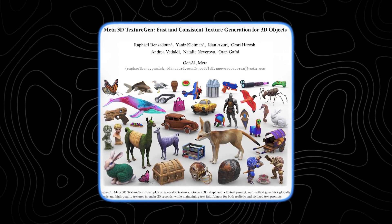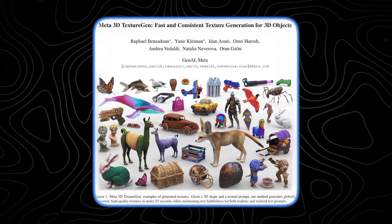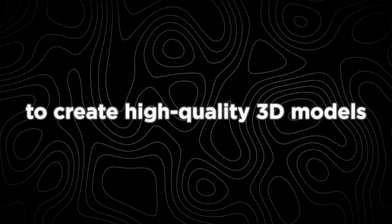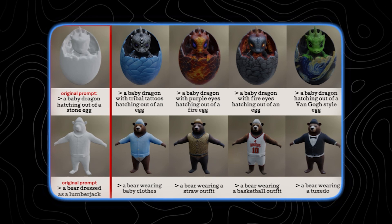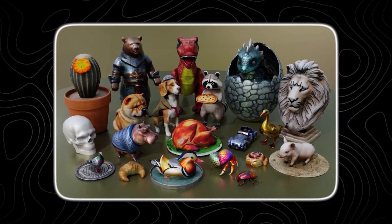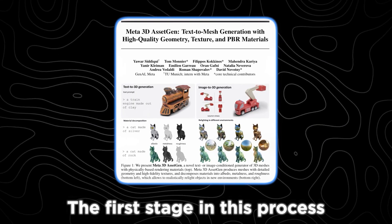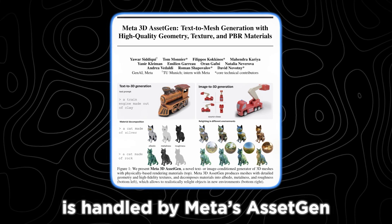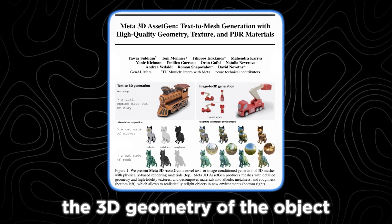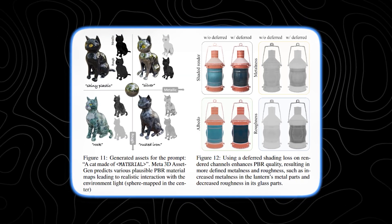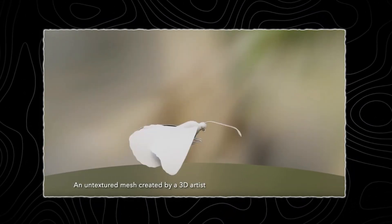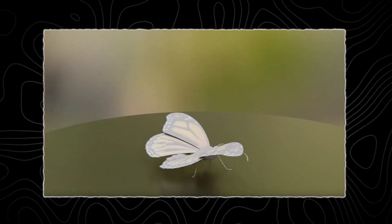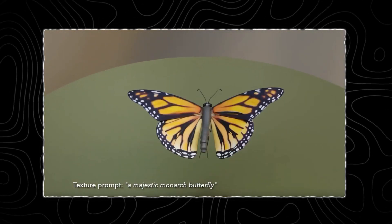Meta's 3D Gen uses a two-stage method that leverages the strengths of two foundational generative models — Asset Gen and Texture Gen — to create high-quality 3D models for immersive content. This approach involves a division of labor between the two models, where each focuses on different aspects of the 3D creation process, allowing for enhanced control and refinement, much like the way text-to-image generators function. The first stage is handled by Asset Gen, which is responsible for generating the 3D geometry of the object. When provided with a prompt, Asset Gen rapidly constructs the basic shape and structure in three dimensions — a process that takes only about 30 seconds — during which the model also applies basic textures and physically-based rendering.